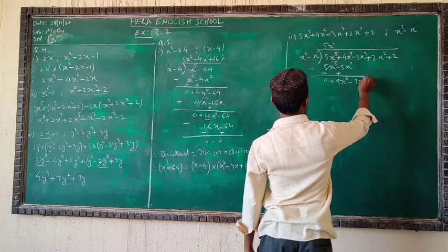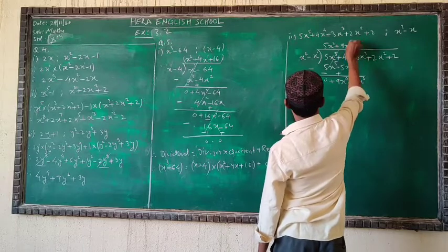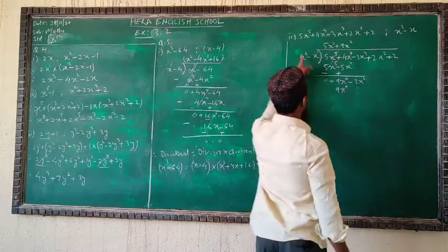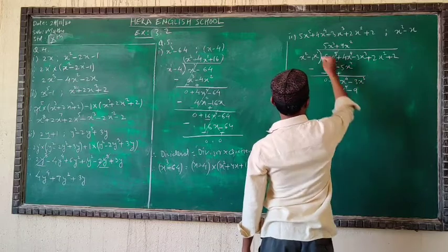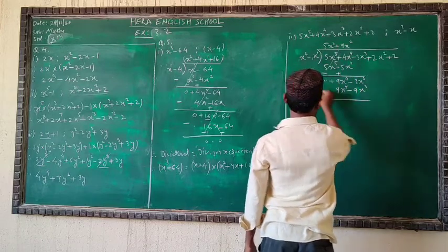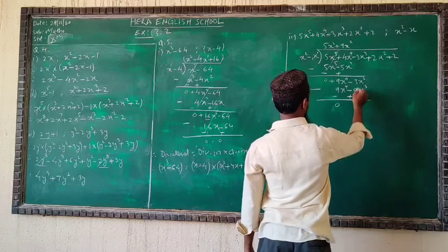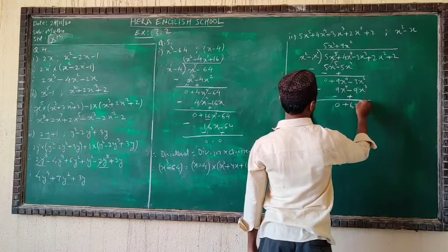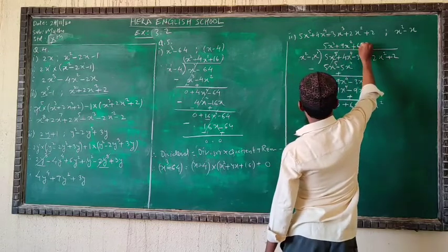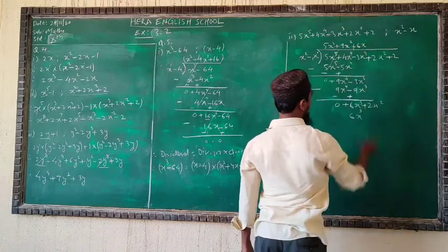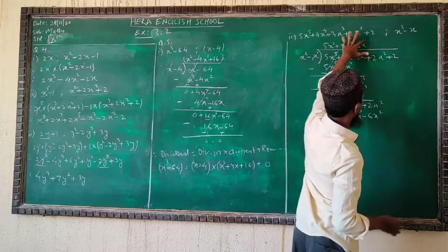Next quotient term: 9x⁴ divided by x² gives 9x². Multiply 9x² by (x² - x): 9x⁴ - 9x³. Subtract — 9x⁴ cancels; -3x³ minus (-9x³) gives +6x³. Bring down 2x². Next: 6x³ divided by x² gives 6x. Multiply 6x by (x² - x): 6x³ - 6x². Subtract — 6x³ cancels; 2x² minus (-6x²) gives 8x².